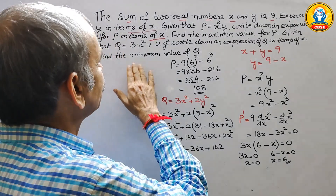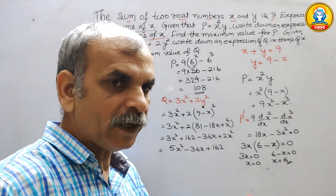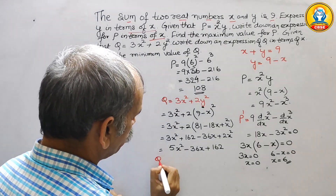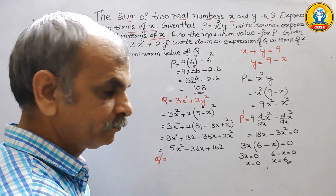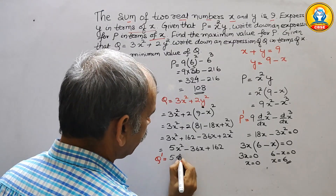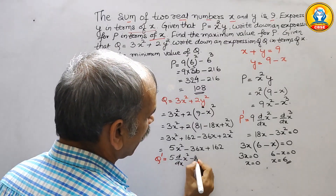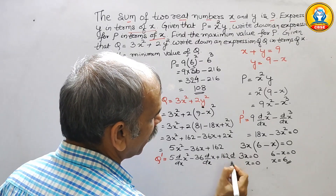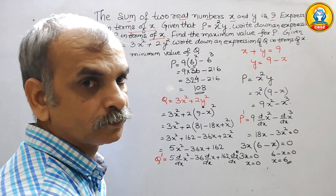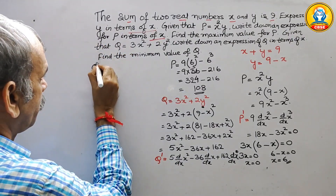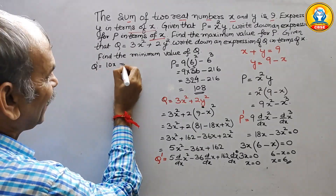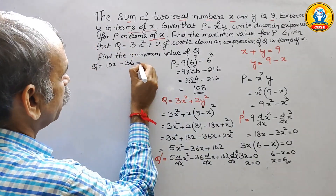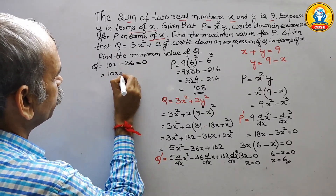Next they have told us to find the minimum value of q. Again we go for differentiation of q. So q dash is equal to 5 d/dx of x squared minus 36 d/dx of x plus 162 d/dx of x to the power 0. That gives q dash equal to 10x minus 36. We make this equal to 0 to find the value of x.